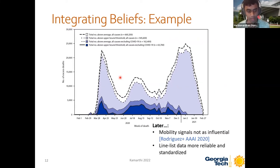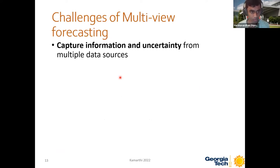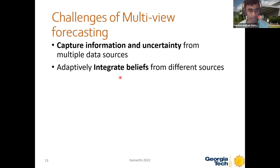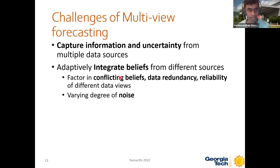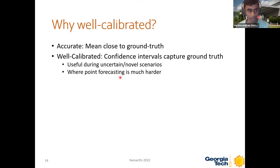Later, mobility signals were found to be not as influential, but line list data became more reliable and standardized, helping it become a more reliable signal for future mortality and number of deaths. The challenge is to integrate the beliefs of both modalities — mobility and line list data — adaptively based on how reliable they are at each time period. In general, the challenge is to account for conflicting beliefs, data redundancy and reliability issues, and different degrees of noise from multiple data views, while providing well-calibrated forecasts where the forecast mean is close to the ground truth and confidence intervals capture the ground truth well.